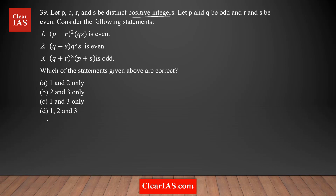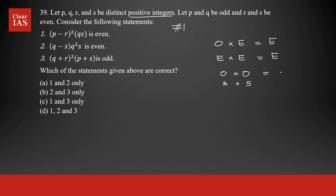The first approach uses the concepts of odd-even properties. The second approach is plugging in values. Let's start with approach one, using multiplication concepts. If you multiply an odd number by any even number, the result is always even. Multiplying two even numbers is also always even. Multiplying two odd numbers — for example, three times five equals fifteen — gives an odd number.